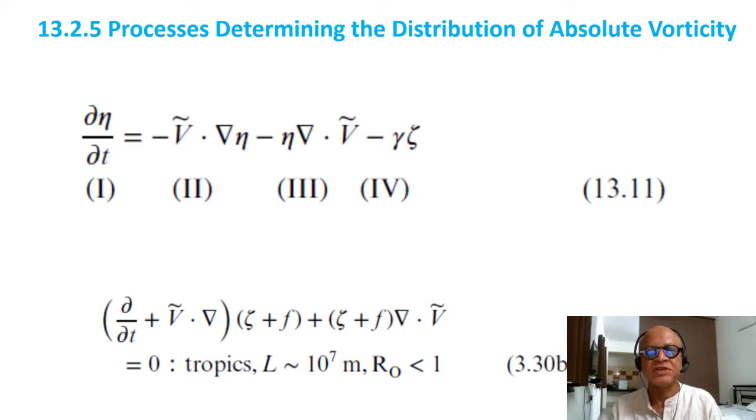Let's look at the processes that actually determine the distribution of absolute vorticity. Look at the vorticity equation: dη/dt, time variation of the absolute vorticity, includes advection of the vorticity and vortex stretching - so divergence of the flow is going to stretch the vortex. And this is the dissipation term. Remember back in chapter 3 we had looked at the vorticity equation and written this vorticity conservation equation. In the tropics for length scales of 10^7 with Rossby number less than 1, which gave us baroclinic processes and coupling of the upper and lower levels.